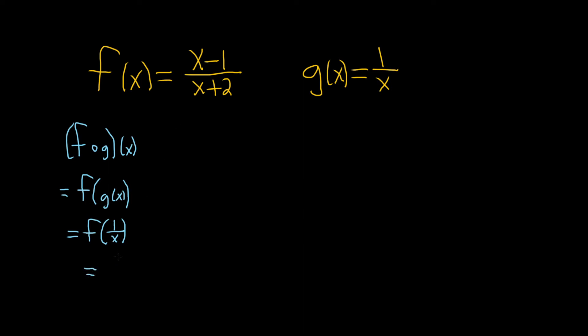So instead of x, it's 1 over x minus 1. And on the bottom, it's x plus 2, but it'll be 1 over x plus 2.